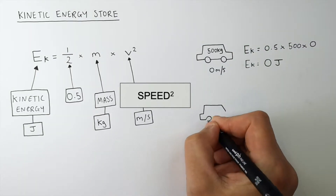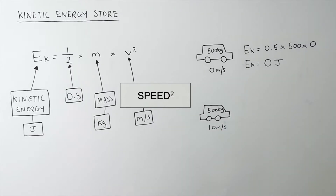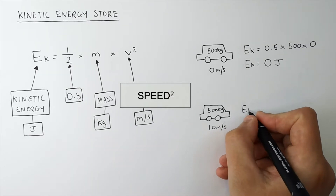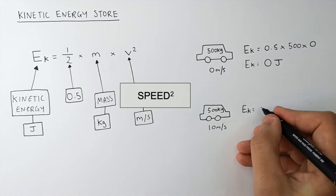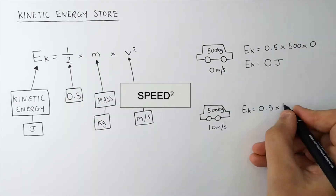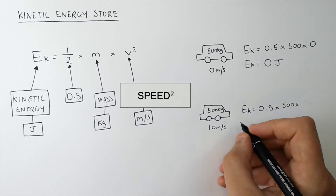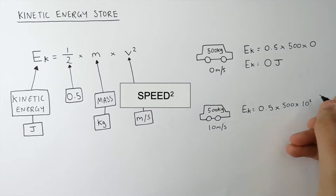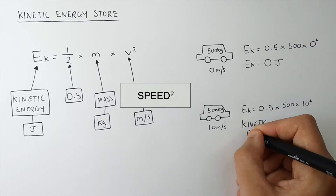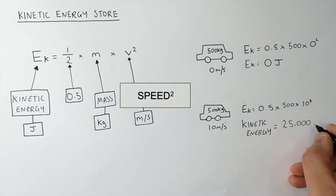The same car of 500 kilograms increases its speed to 10 meters per second. To calculate the energy stored in the kinetic energy store of the car, you simply multiply 0.5 times its mass of 500 kilograms times its speed squared, which is 10 meters per second squared. That gives you a kinetic energy stored in this car of 25,000 joules.